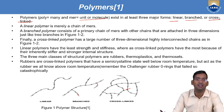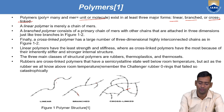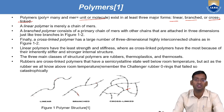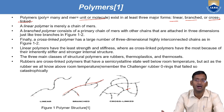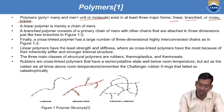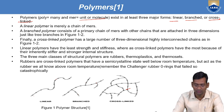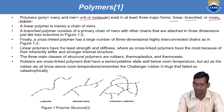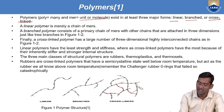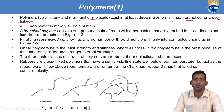So generally these three types of polymers are there. Linear polymer has the least strength and stiffness; cross-linked polymer has the most. Why? Because in cross-linked, this branch is held by this one and by this also — when two things hold anyone, that will definitely be stronger. So linear has the least and cross-linked has the highest strength and stiffness, because of their inherently stiffer and stronger internal structure.